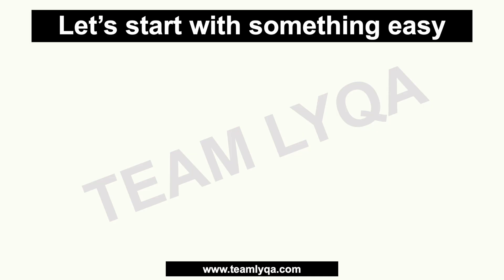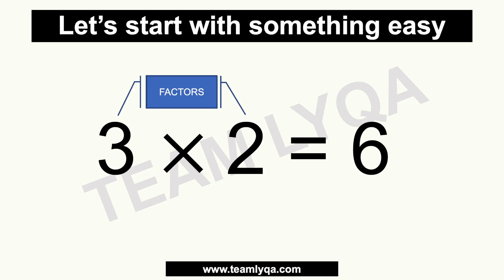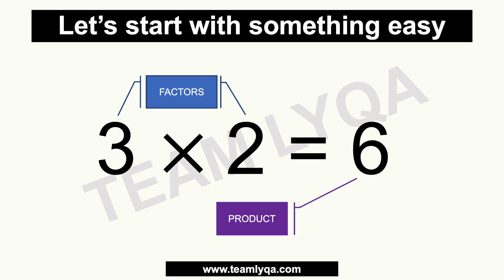Let's start with something really easy. We know that 3 times 2 is 6. Now, if we just memorized this, we might have forgotten the names of the parts. The 3 and 2 are called factors — the two numbers being multiplied are called factors. The number 6, the answer, is called the product. So, factors and product.